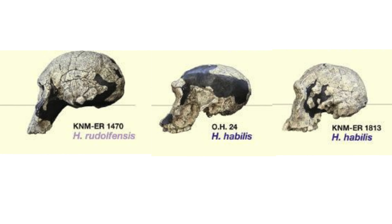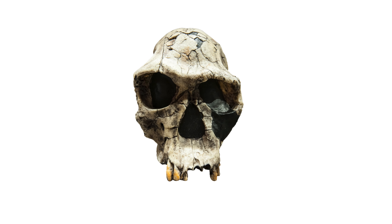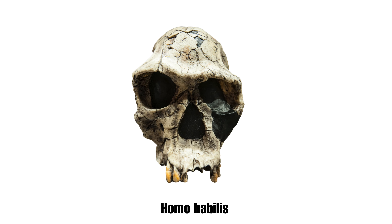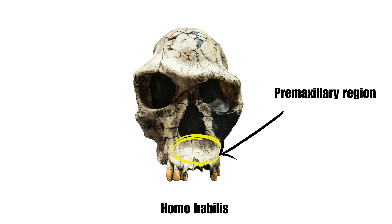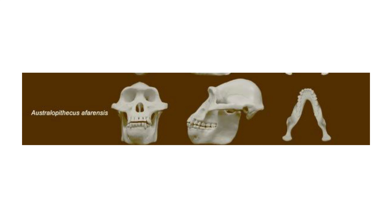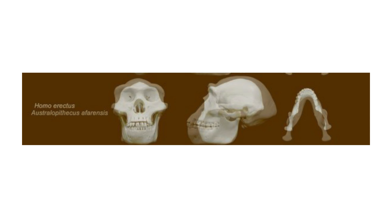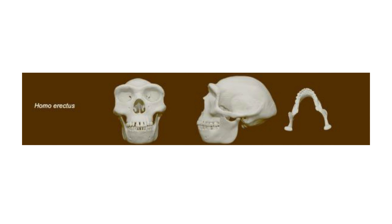The faces of early Homo species are different from Australopiths. In early Homo, the face projection is much less, especially in the area below the nose called the pre-maxillary region. Certain parts of their faces, like the areas around the nose, eyes and cheekbones, tend to face more to the side than in earlier Australopiths.